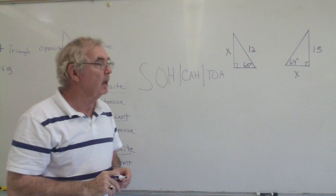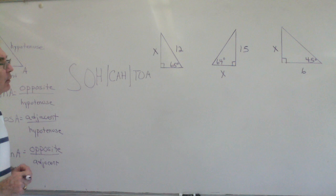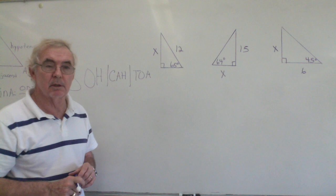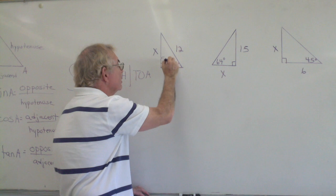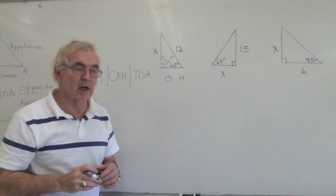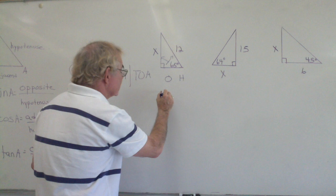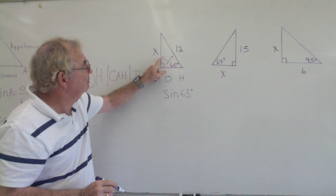Our first right triangle example: we're given an angle of 65° and one side is x and one side is 12. We have to recognize which trig function to use. Looking at what's given — that's opposite (O) and that's hypotenuse (H). Opposite over hypotenuse — looking at SOH-CAH-TOA, that's the sine. So we say the sine of 65 degrees is defined to be the opposite over the hypotenuse.